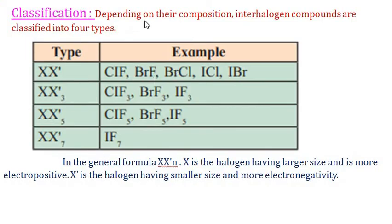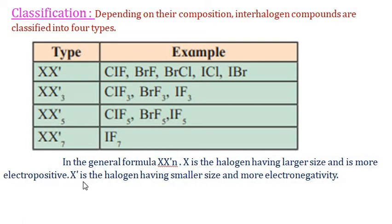In interhalogen compounds of general formula XX'n, X is the halogen of larger size and is more electropositive, while X' is the halogen of smaller size and more electronegative. The central halogen can have oxidation states of +1, +3, +5, or +7, with 3, 2, 1, or 0 lone pairs of electrons respectively.